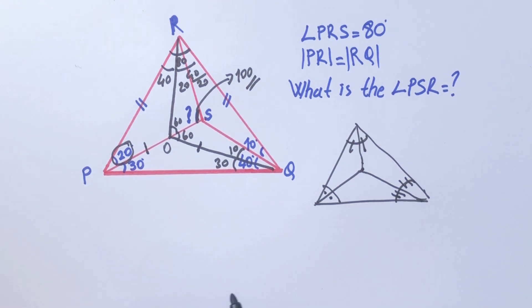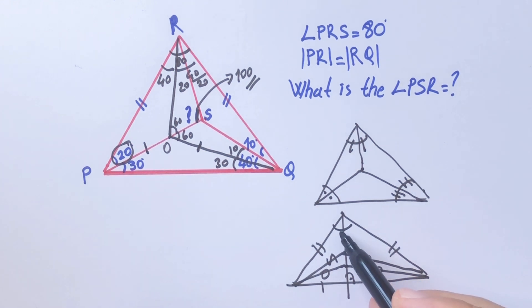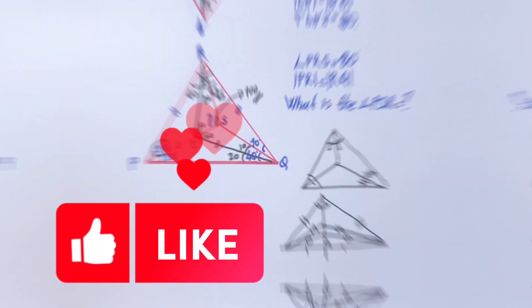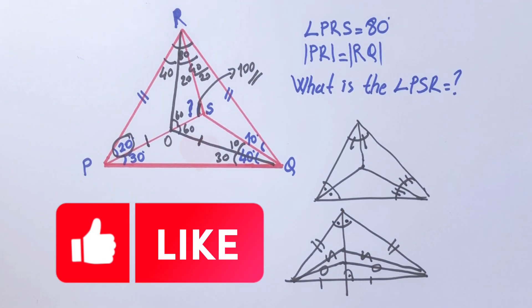And the second one: in an isosceles triangle, the height is a line of symmetry, so these two lengths must be equal and these two angles are equal. Thanks for watching.